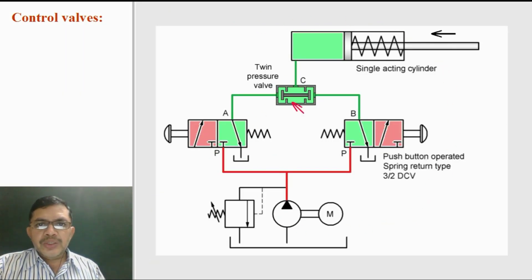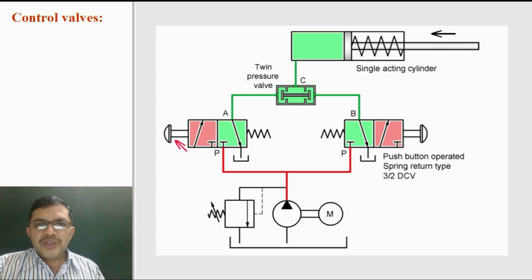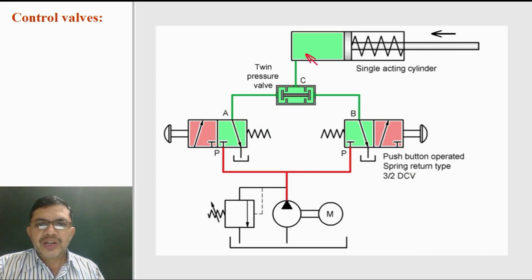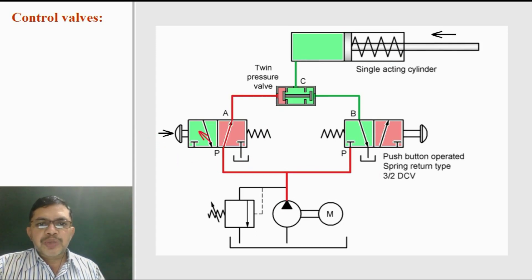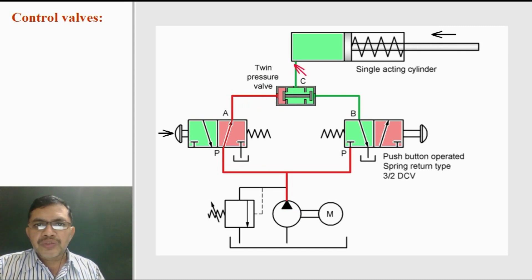This is the circuit diagram using the twin pressure valve. This is valve A and this is valve B. These two valves are push-button operated, spring-return type, normally closed, 3×2 direction control valves. If the valves are not pressed, then there is connection from cylinder port to tank port and hence the cylinder will retract. If valve A is pressed, then from the pump, oil flows to port A of the twin pressure valve, the inside spool will shift towards the right, and it will close port C, so oil cannot flow to the cylinder.